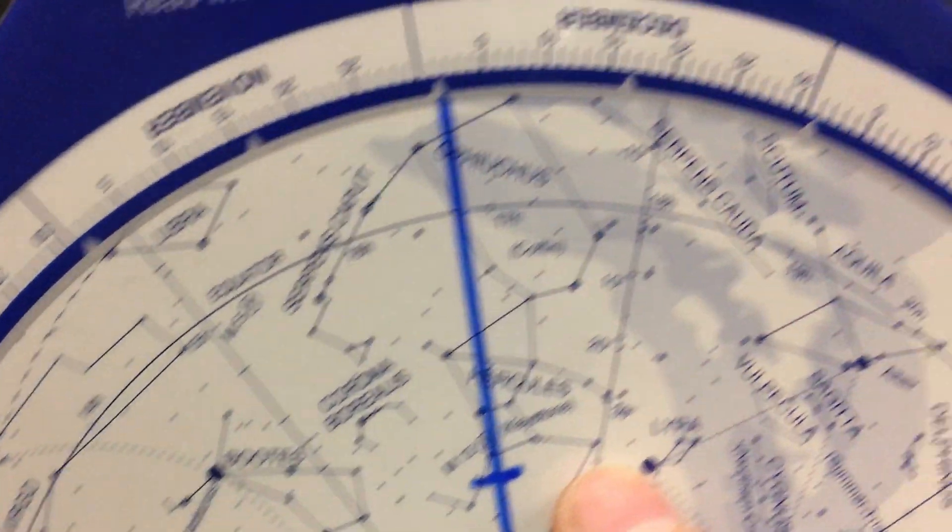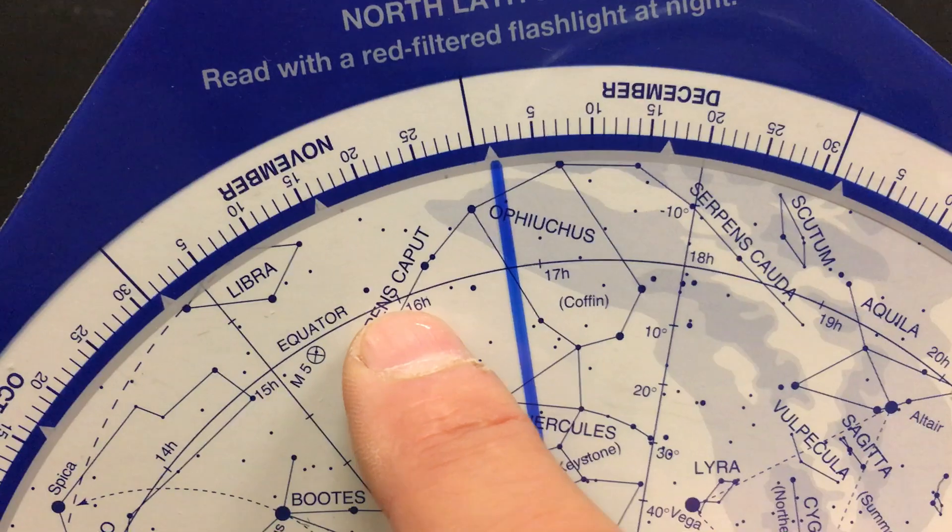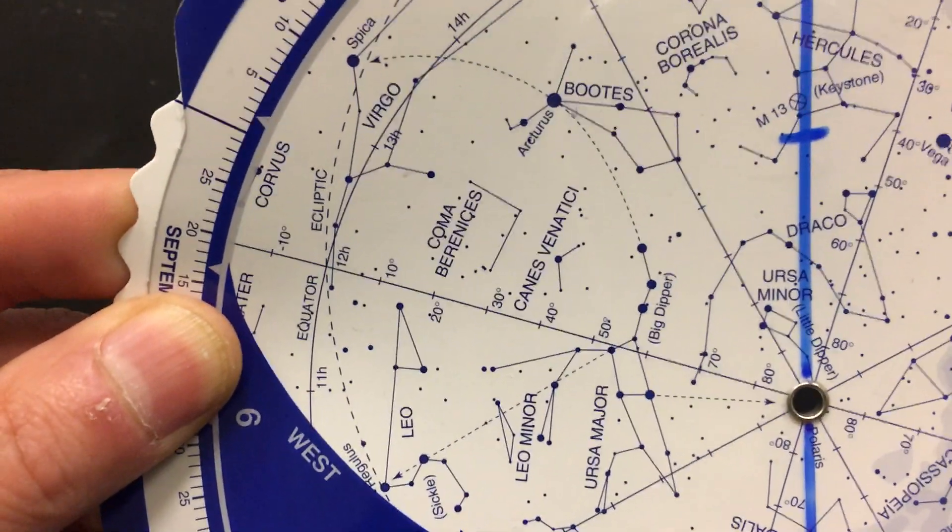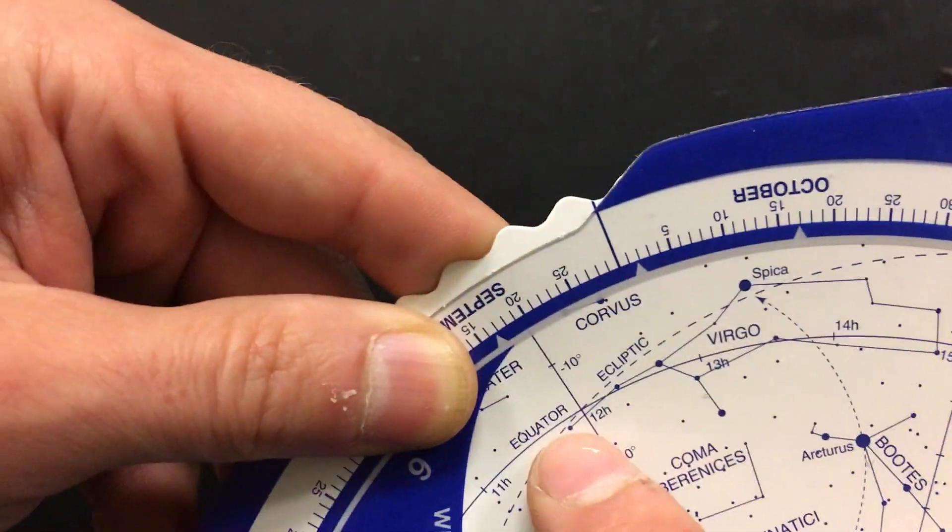As far as right ascension goes, the solid line that rises in the east and sets in the west is our celestial equator, and it's marked as such.